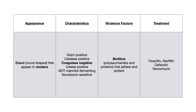Here is our summary slide. The appearance of Staph epidermidis: it's a coccus — round, spherical shaped — and these typically appear in clusters. Recall also that you will not be able to differentiate it visually when comparing it against Staph aureus, which is why we look at the characteristics: gram positive, catalase positive, but coagulase negative — which differs from Staph aureus — and urease positive, which also differentiates it from Staph aureus.